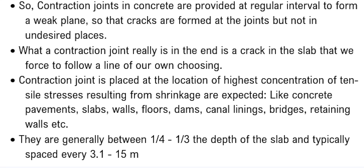Contraction joints are used in concrete pavements, slabs, walls, floors, dams, canal linings, bridges, retaining walls, and more. They are generally between one-quarter to one-third the depth of the slab and typically spaced every 3.1 to 15 meters.